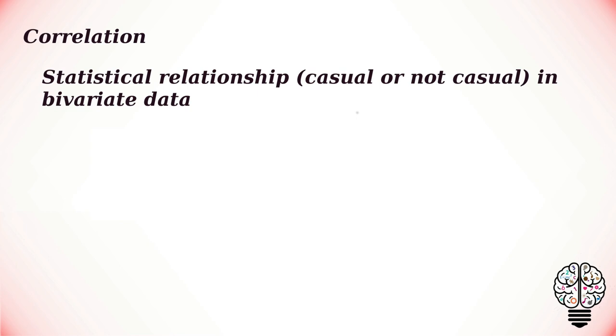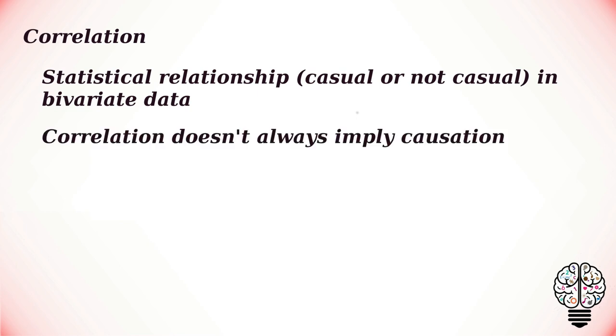Let us take a look at an example to understand this. The consumption of ice cream increases during the summer months. There is a strong correlation between the sales of ice cream units. Here we see there is a casual relationship as the extreme summers push the sale of ice creams. Ice cream sales also has a strong correlation with shark attacks. Here we can clearly see that the shark attacks are not caused due to ice creams, so there is no causation here.